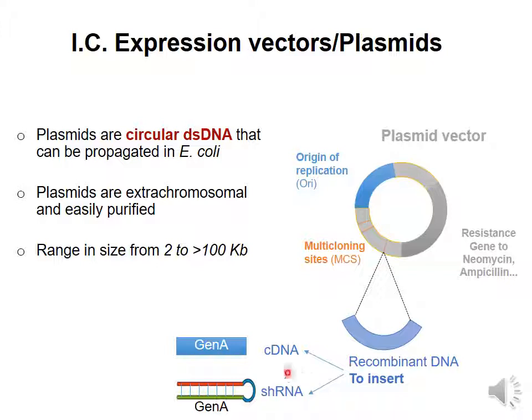Or we can express a small hairpin RNA that will result in a double strand RNA for inhibition purposes.